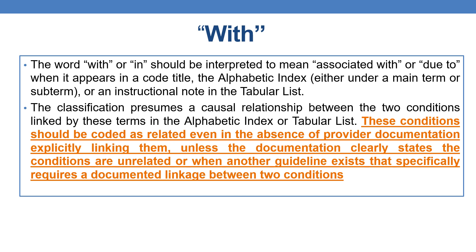Whenever you find 'with', you need to interpret that those two conditions are associated, or one condition is due to the other. When it appears in the code title in the alphabetical index under the main term or the subterm, or in an instructional note in the tabular list, the classification presumes a cause-and-effect relationship between two conditions linked by these terms. These conditions should be coded as related.